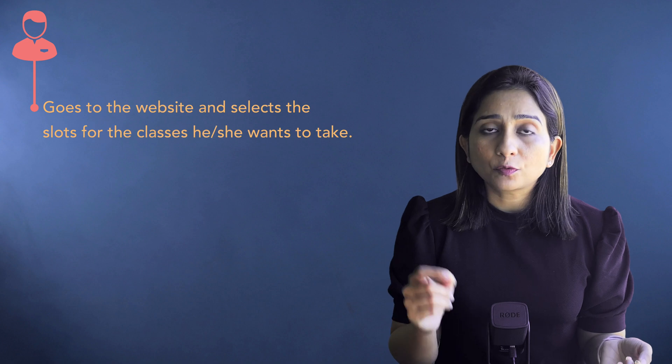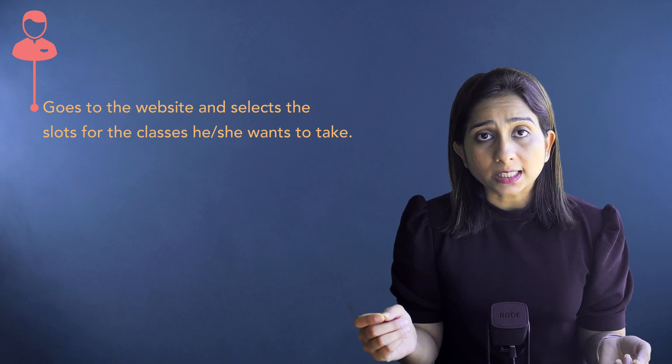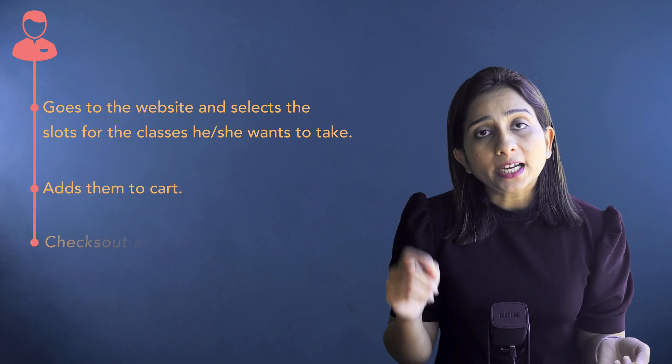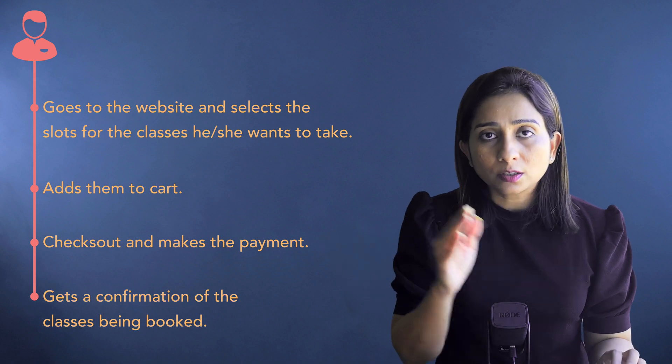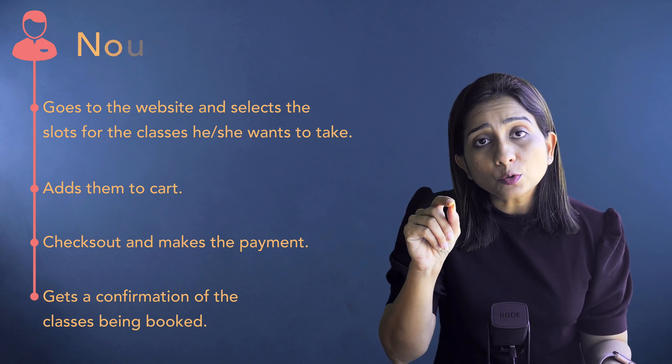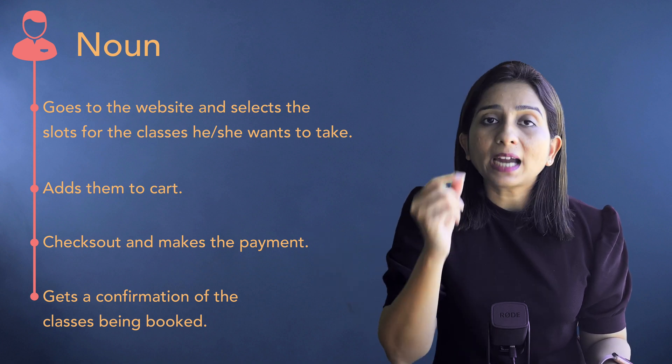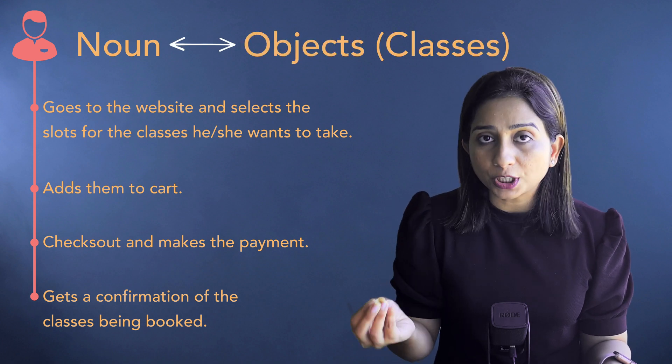Let's start with a new problem and build a solution for it. There is a driving school that wants a web application for people who want to learn driving. The use case is: a user applying for a driving license goes to the driving school website, selects slots for the classes they want to take, adds them to the cart, checks out, makes payment, and gets a confirmation for the classes being booked. Now try to read this use case and find all the nouns available in it — by identifying nouns we are actually identifying the real world objects.